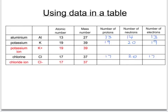So, when we look at the potassium ion, just like the potassium atom, it will have 19 protons and 20 neutrons, but because it's lost an electron, it's gone down to 18 electrons.